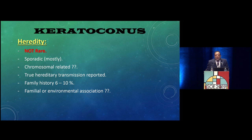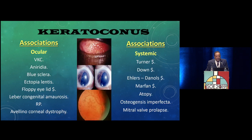Keratoconus is mostly sporadic. There is chromosomal involvement, and genome exploration of the chromosomes affecting people with keratoconus is ongoing. True hereditary transmission is reported — family history accounts for about 6 to 10% of cases. There are associations with ocular diseases such as vernal keratoconjunctivitis, as well as systemic associations like Down syndrome, Ehlers-Danlos, Marfan syndrome, and atopy.